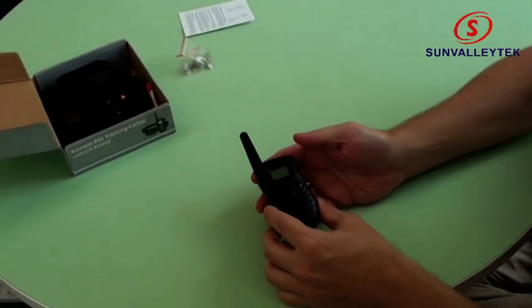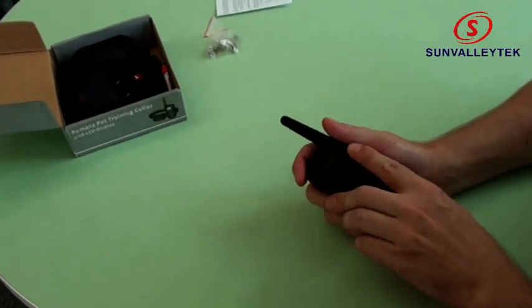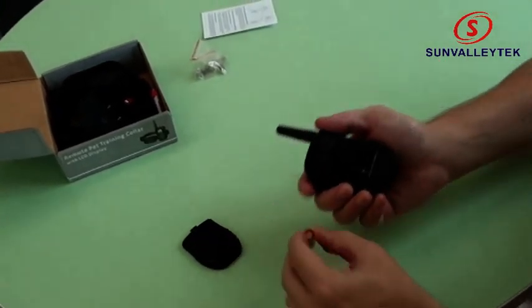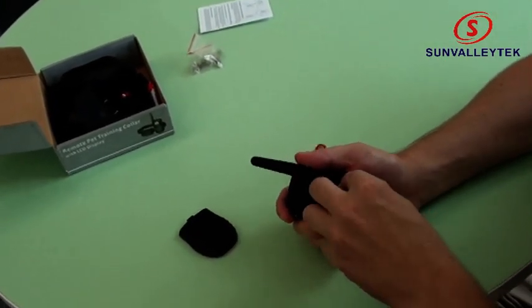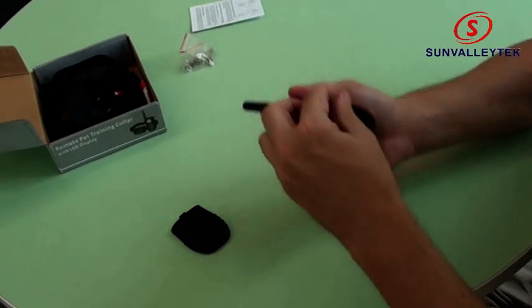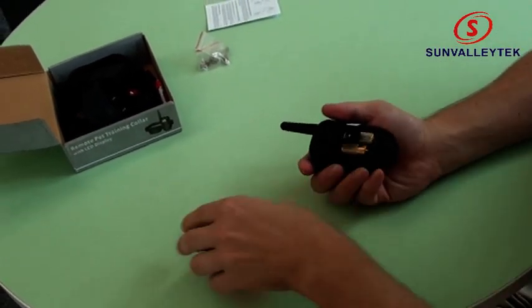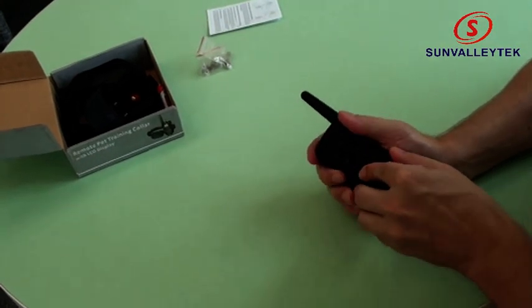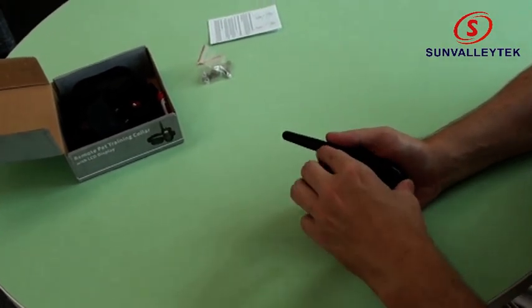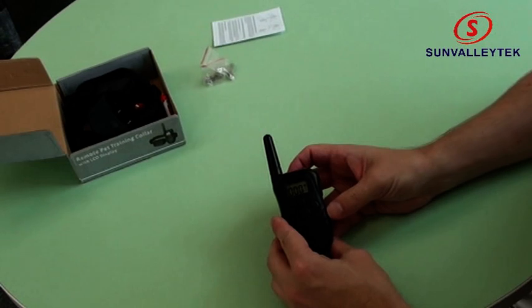Okay, first let's set up the remote. It takes two six-volt batteries. You can see the display is active.